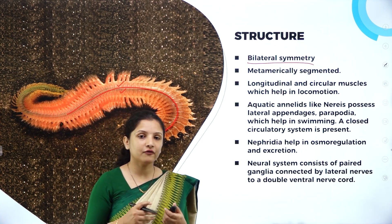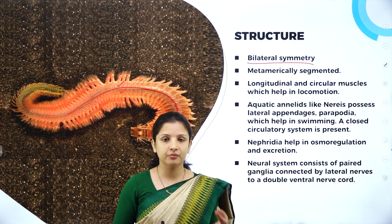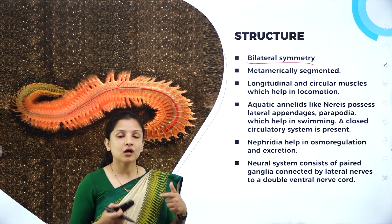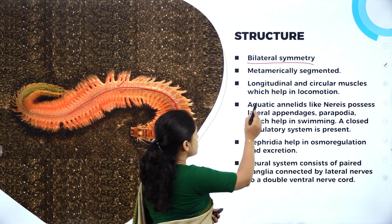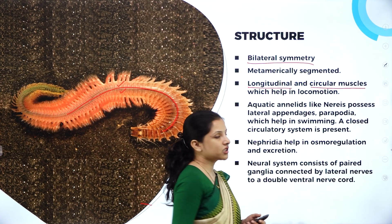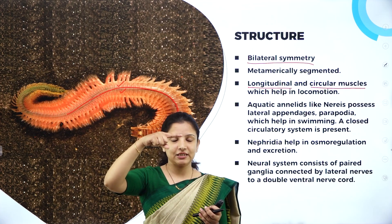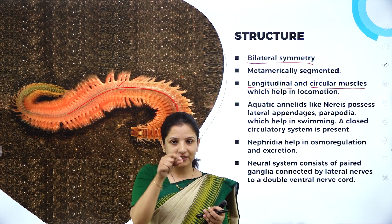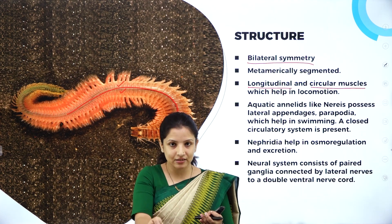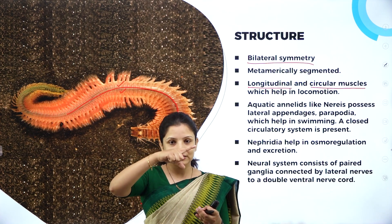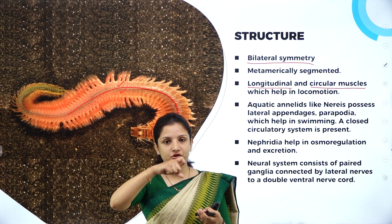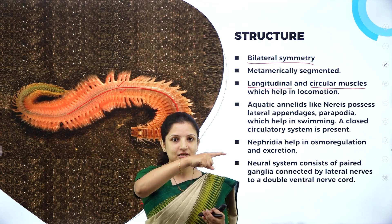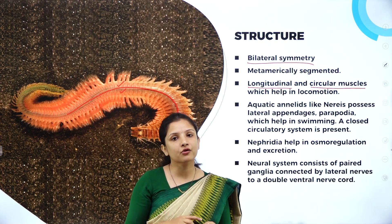Some annelids which are terrestrial, like earthworm and leech, do not have feet or limbs to move. So how exactly do they move? They have longitudinal and circular muscles in the body which help in locomotion. It is just like a spring — when you press a spring and release it, it moves a certain distance. Similarly, the circular and longitudinal muscles contract and relax, and with this contraction and relaxation, the organism crawls and creeps. That is how terrestrial annelids move.